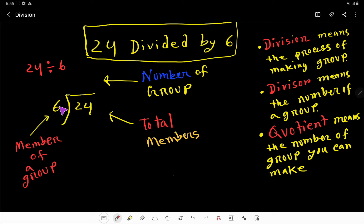What do you mean by divisor? Divisor means the member of a group. Here divisor 6 means member of a group - here member of a group will be 6.